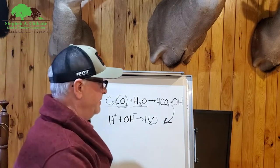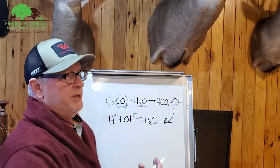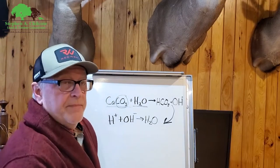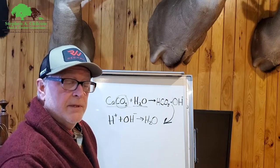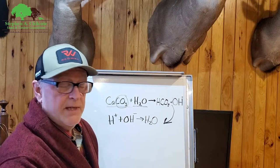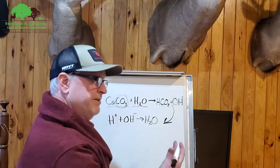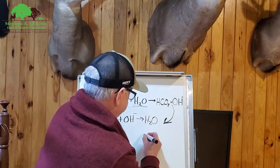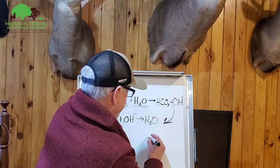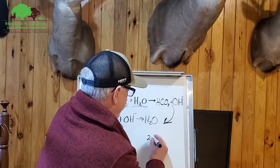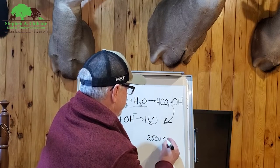That's what changes your pH. Now most of the soils in Pennsylvania mountains require three tons of lime to get to a 6.5 pH. So if you have three tons of pulverized limestone, you're looking at probably 2,500 pounds of calcium in there.